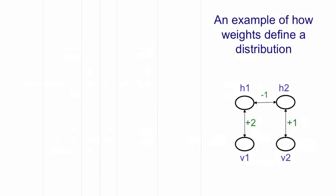So let's take a network with two hidden units and two visible units and we'll ignore biases. So we've just got three weights here. To keep things simple, I'm not going to connect the visible units to each other.